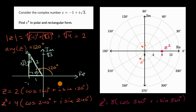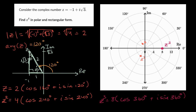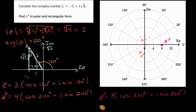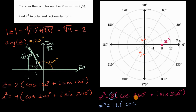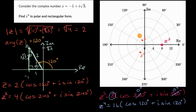What is z to the fourth power? I'll take the modulus of z cubed and multiply by two to get 16. Then I add another 120 degrees. I could write cosine of 480 degrees, but 360 degrees equals zero degrees, so adding 120 gives cosine of 120 degrees plus i sine of 120 degrees. So my argument is back to 120 degrees, but now my modulus is 16. That puts z to the fourth at this outer circle, right over there.